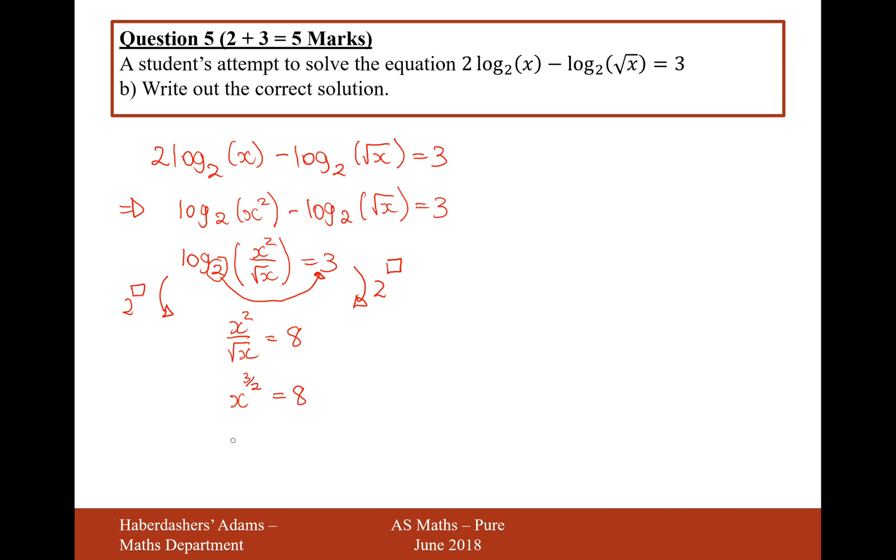Now I'm going to square both sides. That will give me x cubed equals 64. Squaring both sides will get rid of this 2 on the denominator of the indice there. And then cube root, I'm going to cube root to get x and x equals 4.